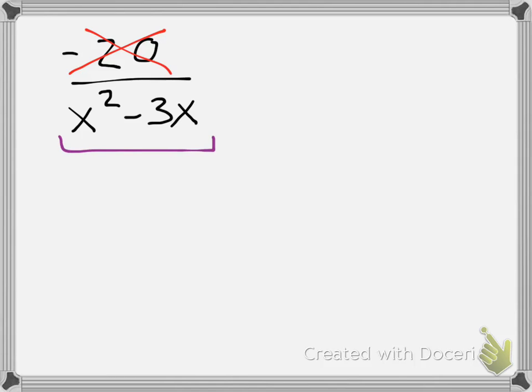We'll do one more example that's a little bit more complicated. Let's do, for example, negative 20 over x squared minus 3x. When I'm looking at this, like I said before, when we're talking about just non-permissible values, I don't really care what's going on in the numerator. For the time being, eventually we'll have to deal with the numerator, but for now, we're not going to worry about it. I do know my first step, though, is to factor.